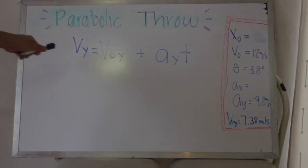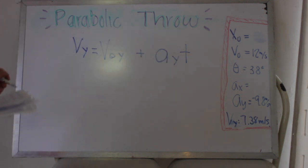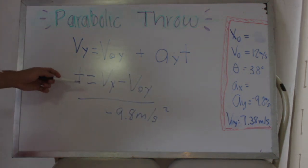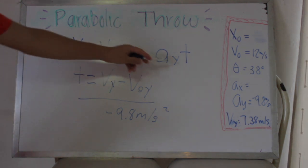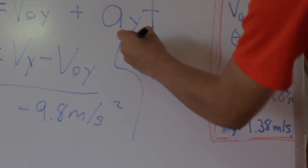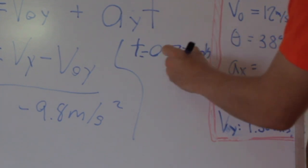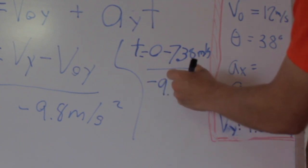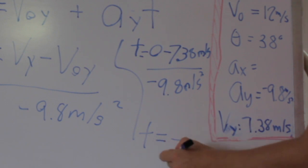With this equation, the next step is getting the time that the ball reaches its maximum altitude. We do this by isolating time. Time equals the final velocity of Y minus the initial velocity of Y, divided by the Y acceleration. So, our data gives us: time equals 0 minus 7.38 meters per second, divided by minus 9.8 meters per second squared. The result is time equals 0.75 seconds.